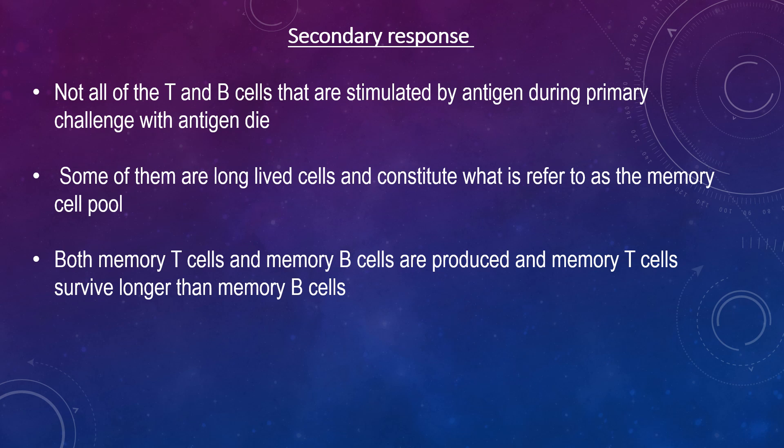Upon secondary challenge with antigen, not only are naive T and B cells activated, but the memory cells are also activated, resulting in a shorter lag time in the secondary response. Since there is an expanded clone of cells being stimulated, the rate of antibody production is also increased during the log phase and higher levels are achieved. Additionally, most of the memory B cells have already switched to IgG, IgA, or IgE production.